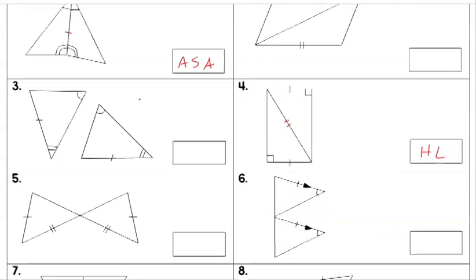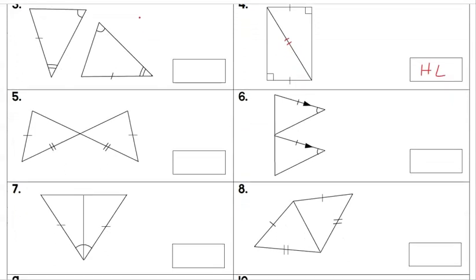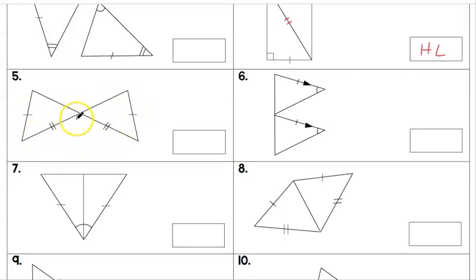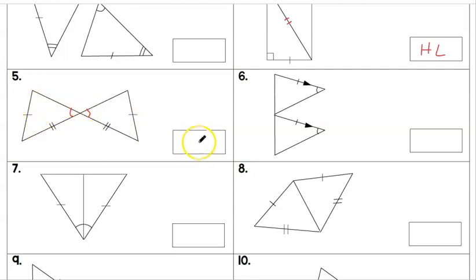Number five — we notice a couple of pairs of corresponding congruent sides, but we're not told anything about these angles being congruent, so we can't do Side-Angle-Side. We know that certain angles are congruent, but that would not be Side-Angle-Side either. The bottom line is that no congruency can be established from what we're given, so we say not congruent.